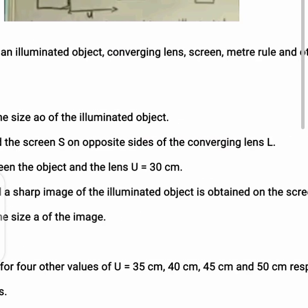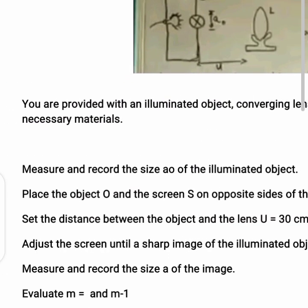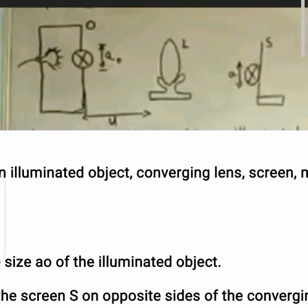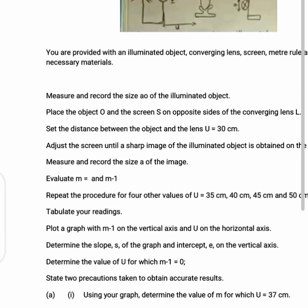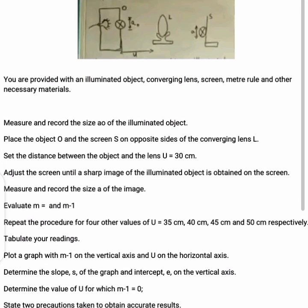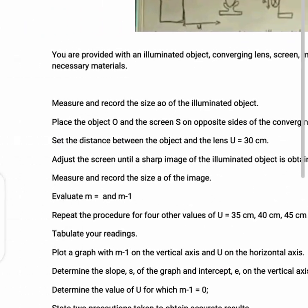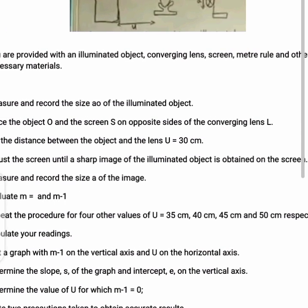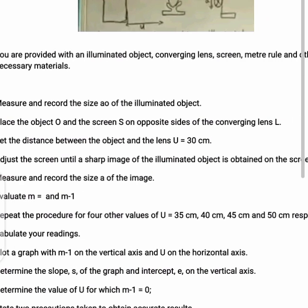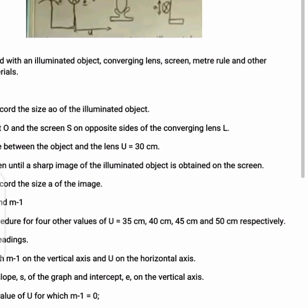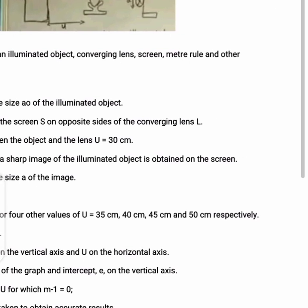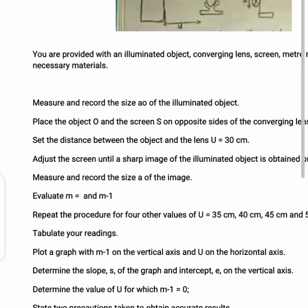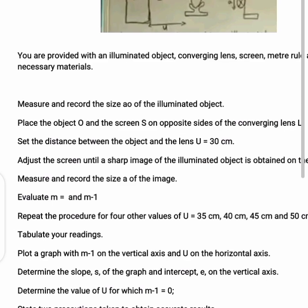You are provided with an illuminated object which is the ray box, a converging lens, a screen, a meter rule, and other necessary materials. You are going to measure and record the size of the illuminated object. Place the object O and the screen S on opposite sides of the converging lens, as arranged in the diagram.